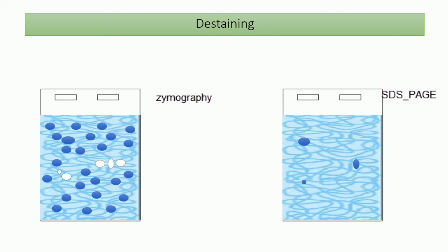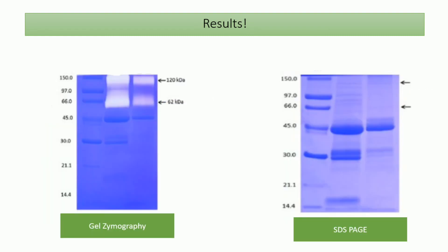The next step is de-staining, where we remove excess dye from the gel. In SDS-PAGE, only proteins bound to the dye remain stained, giving blue bands on a transparent background. In zymography it is the opposite: because gelatin is evenly distributed in the resolving gel, only the regions where an active catalytic enzyme was present show degradation, appearing as transparent bands on a blue background. Those are the key differences visible in the two gel photos.